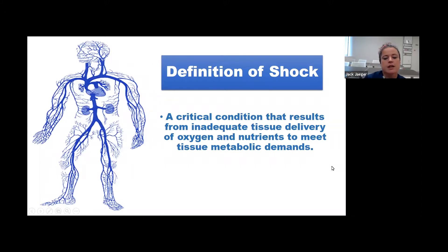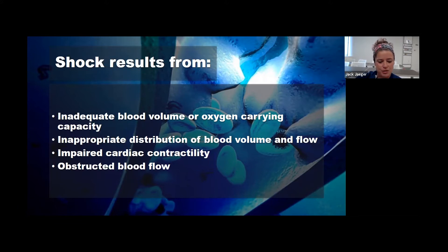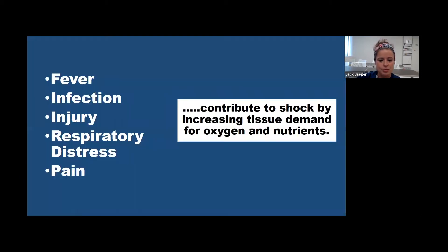Shock is a critical condition that results from inadequate tissue delivery of oxygen and nutrients to meet the tissue's metabolic demands. It can come from inadequate blood volume or oxygen carrying capacity, inappropriate distribution of blood volume and flow, impaired cardiac contractility, or obstructed blood flow. We're going to break that down into more simple terms.